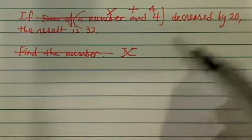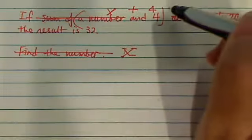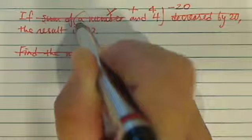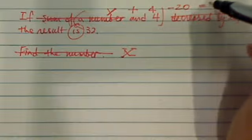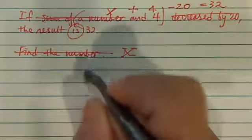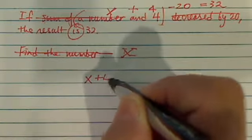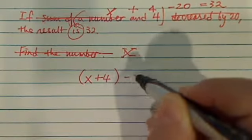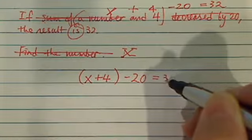If it's decreased by 20, which means subtract 20, the result is equal to 32. So here's a pretty simple equation for us to solve. Sum of the number, if it's decreased by 20, then you have 32.